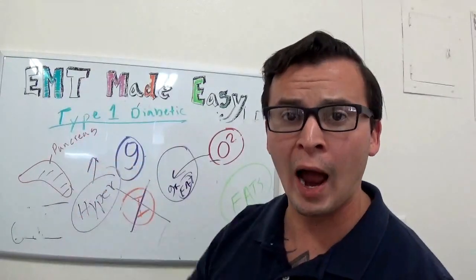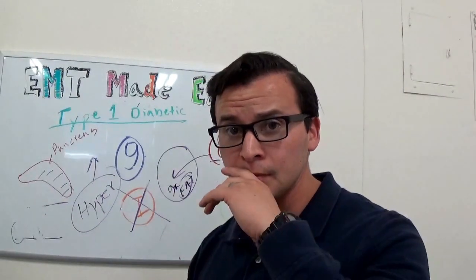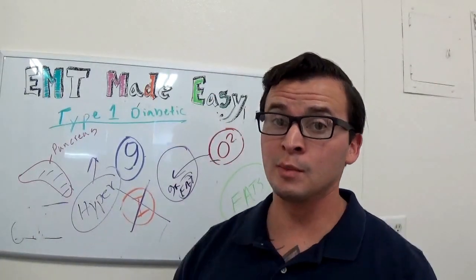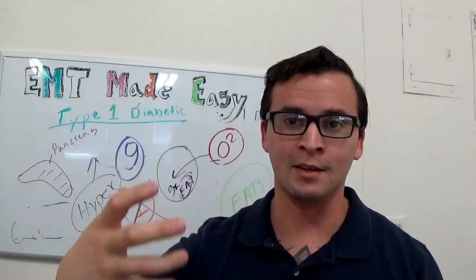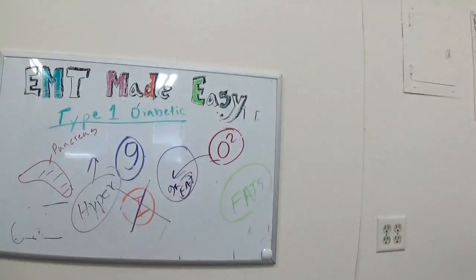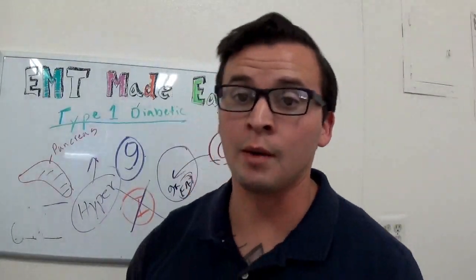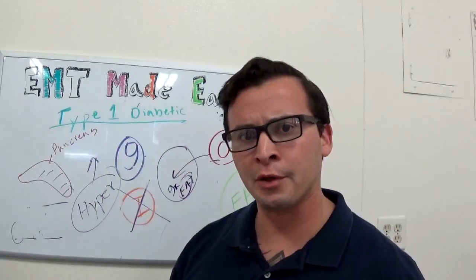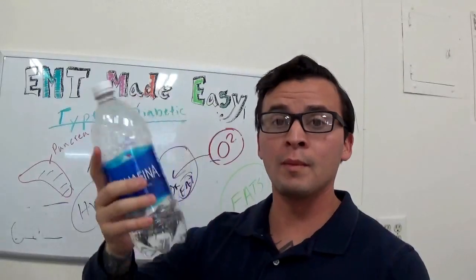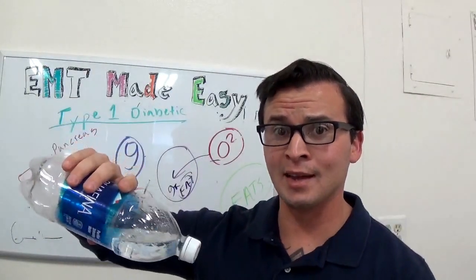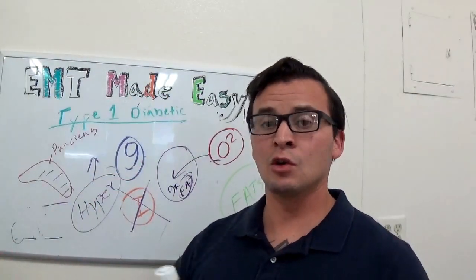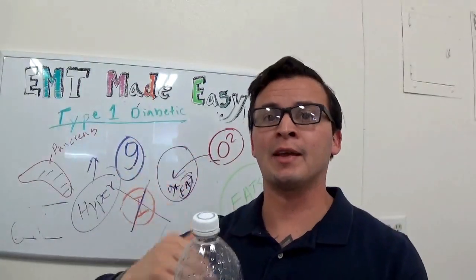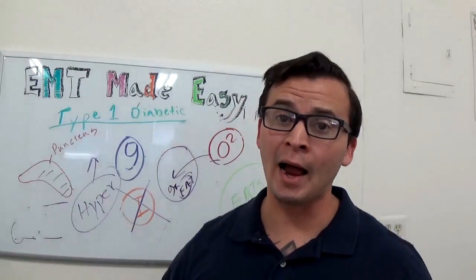When patients are hyperglycemic — 'hyper' meaning high — they're going to pee a lot and be very thirsty. Think of a hyperglycemic patient like a bottle of sweet tea with way too much sugar. What do you do? You pour some out and add more water to equalize it. That's exactly how a hyperglycemic patient presents: peeing a lot and drinking a lot of water to try to dilute all that excess sugar.